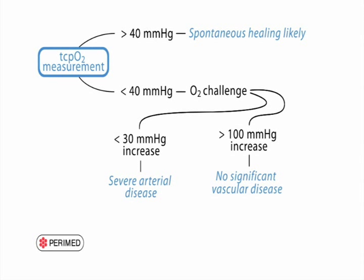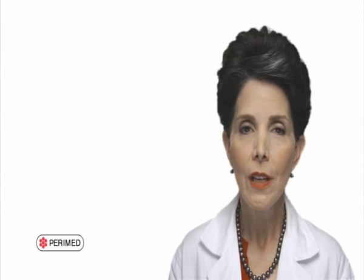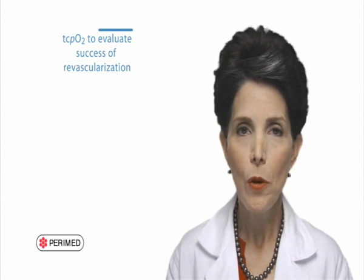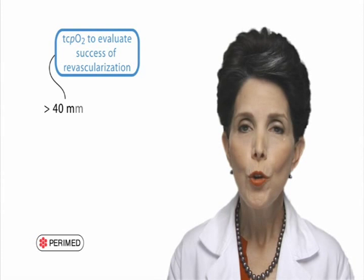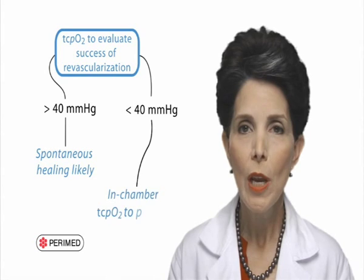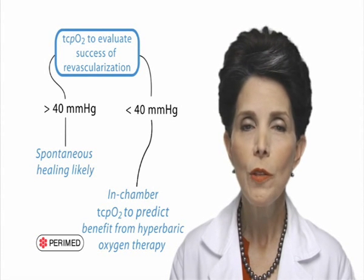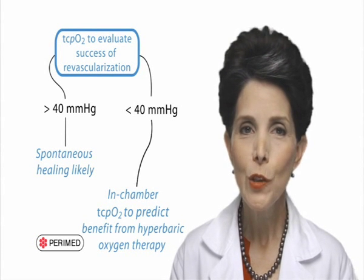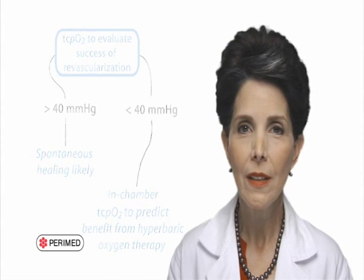A poor response may indicate the patient has significant arterial disease, and your next step would be to order a more definitive test of the anatomy, like an angiogram. After revascularization, you might repeat the TcPO2 study. If the normobaric oxygen values are still low, then you might consider an in-chamber test to determine whether hyperbaric oxygen therapy would be helpful, assuming the patient meets the criteria for this treatment.